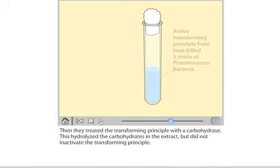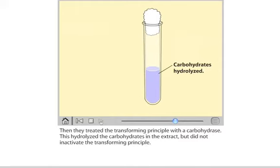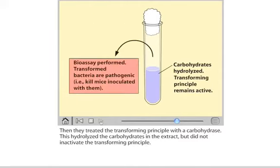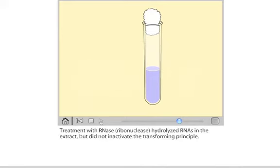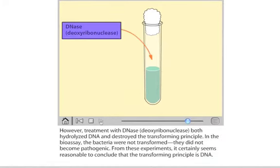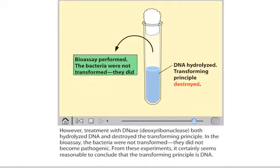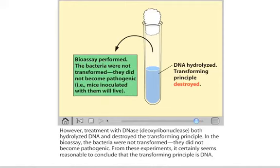Then they treated the transforming principle with a carbohydrase, which hydrolyzed the carbohydrates in the extract but did not inactivate the transforming principle. Treatment with RNase, ribonuclease, hydrolyzed RNA in the extract but did not inactivate the transforming principle. However, treatment with DNase, deoxyribonuclease, both hydrolyzed DNA and destroyed the transforming principle. In the bioassay, the bacteria were not transformed — they did not become pathogenic. From these experiments, it certainly seems reasonable to conclude that the transforming principle is DNA.